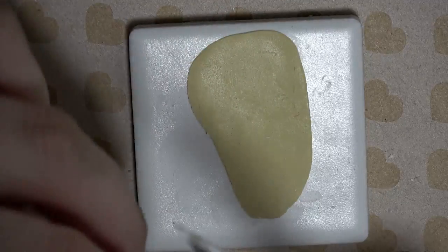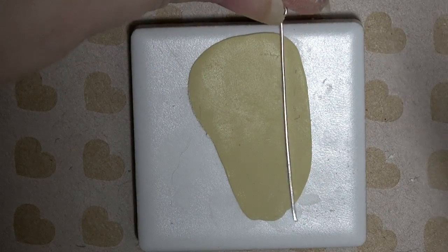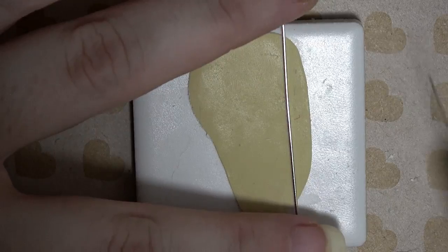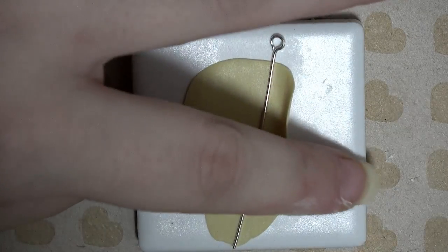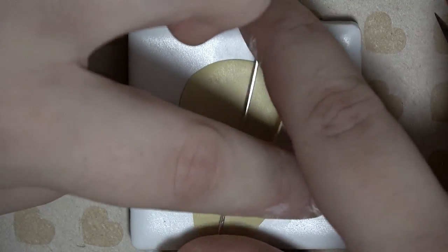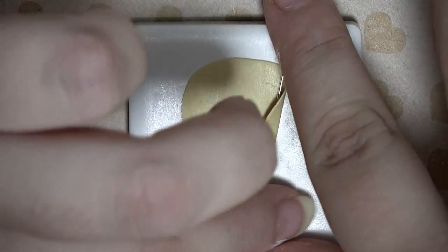To make penne I thinned out a sheet of clay, then I wrapped the clay around an eye pin and cut away any excess. Then gently roll the pin to seal any open edges.